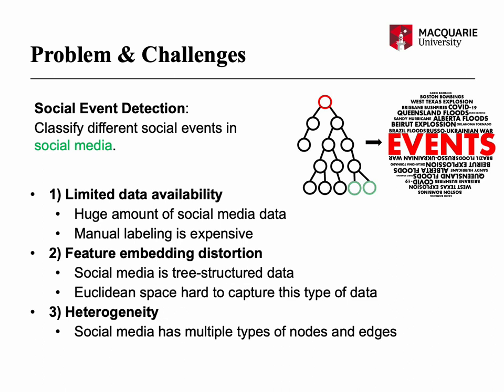The third one is the heterogeneity. Social media messages are not just text — they also contain other heterogeneous information, such as time, place, people, and entities.